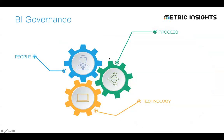Gartner has commented that through 2022, only 20% of organizations investing in information governance will succeed in scaling their initiatives across the enterprise. That means 80% of governance initiatives that are going to be attempted are going to fail — a staggering failure rate. For many of us, that's not a big surprise, because scaling governance initiatives beyond a small department to enterprise scale and generating ROI for your effort is actually a very complex task.